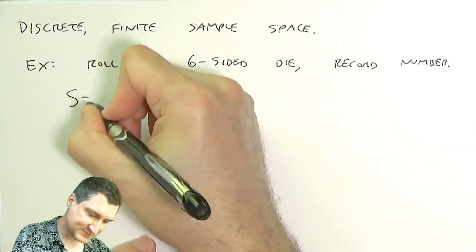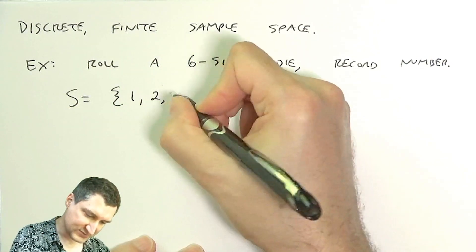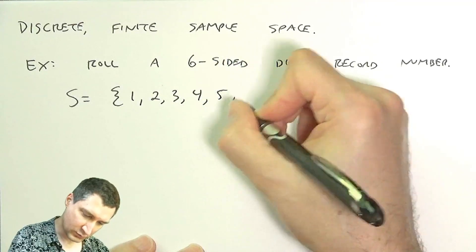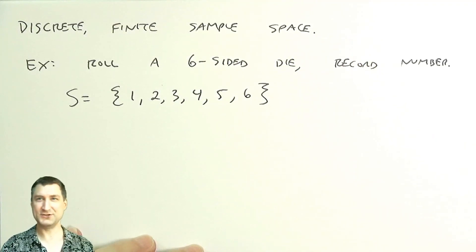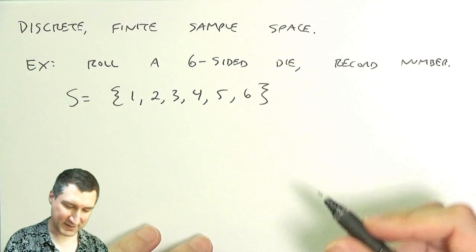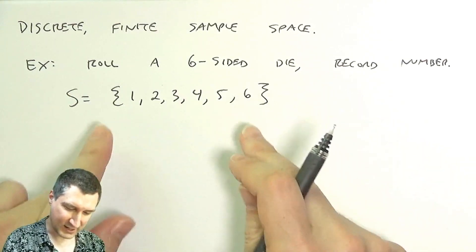That means that my sample space is one through six. Just to be clear in case my penmanship gets worse, these are curly braces that indicate a set of numbers.